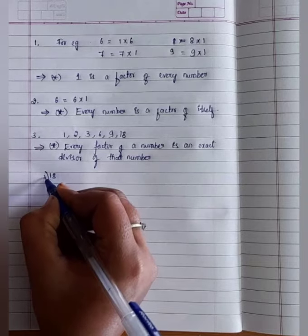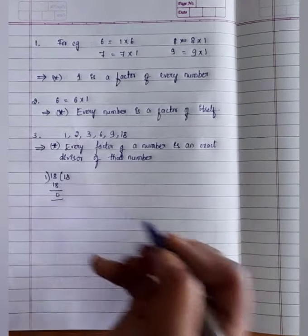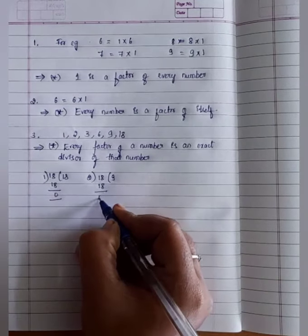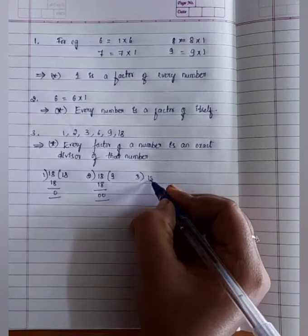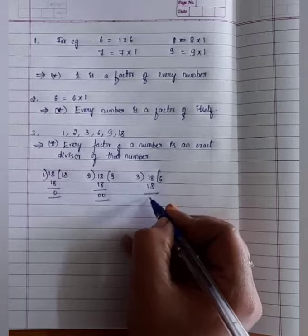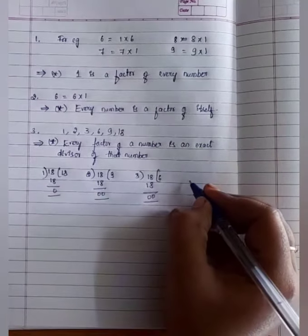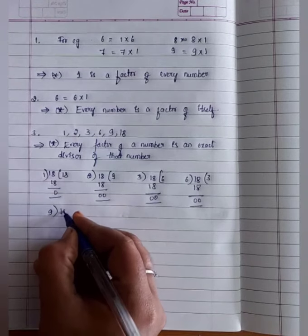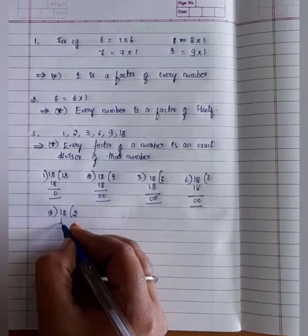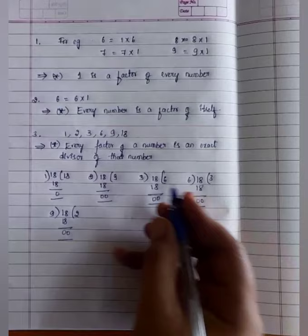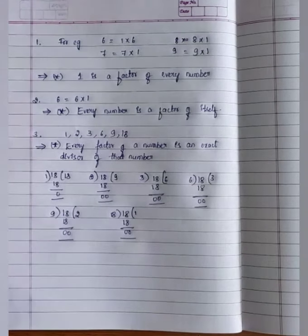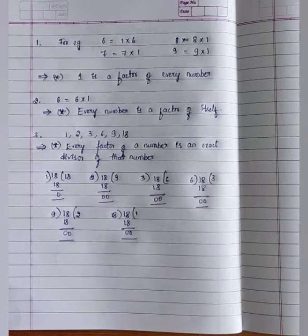Observe here: 18 ÷ 1 gives remainder 0. Divide 18 by 2 — remainder 0. Divide 18 by 3 — remainder 0. Divide 18 by 6 — remainder 0. Divide 18 by 9 — remainder 0. Divide 18 by 18 — remainder 0. So every factor of a number is an exact divisor of that number.